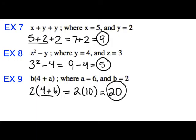And one last one with parentheses. Let b be 2 and a is 6. 4 plus 6 is 10, so it's 2 times 10 which is 20.